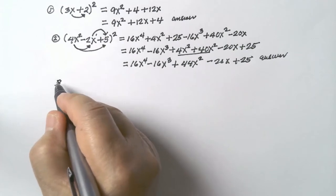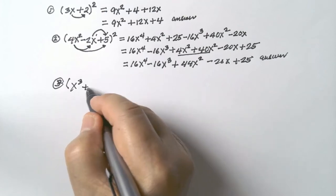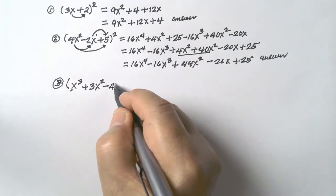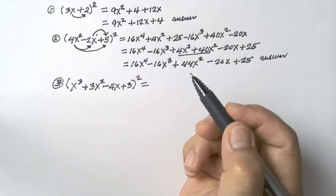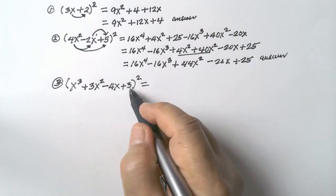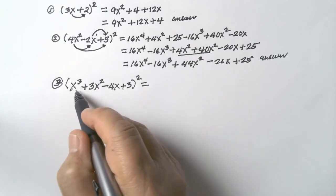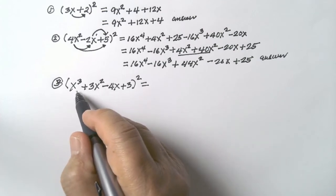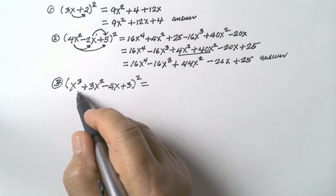Another example — number 3. We have (x cubed plus 3x squared minus 4x plus 3) squared. Here's what you do: square the first term, square the second term, square the third term, square the fourth term. Then distribute the first term to the second — multiply and then multiply the result by 2. Multiply the first term by the third, then multiply the result by 2.